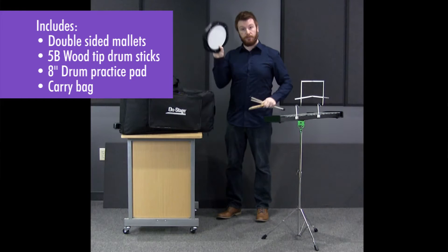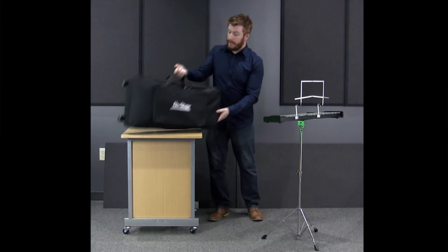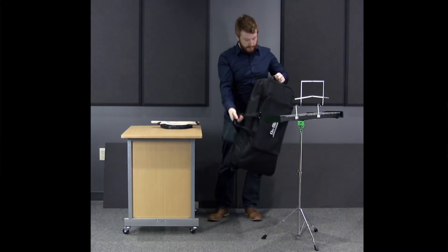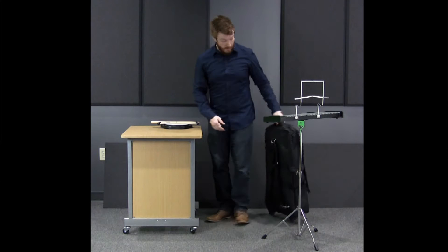It also comes with a really nice bag. It's got carry handles, a pocket on the front where you can store your music, your sticks, and other goodies. You've got roller wheels on the bottom so you can load everything up and just drag it right behind you, or there's even included backpack straps so you can throw it over your shoulders and take it on the go that way.